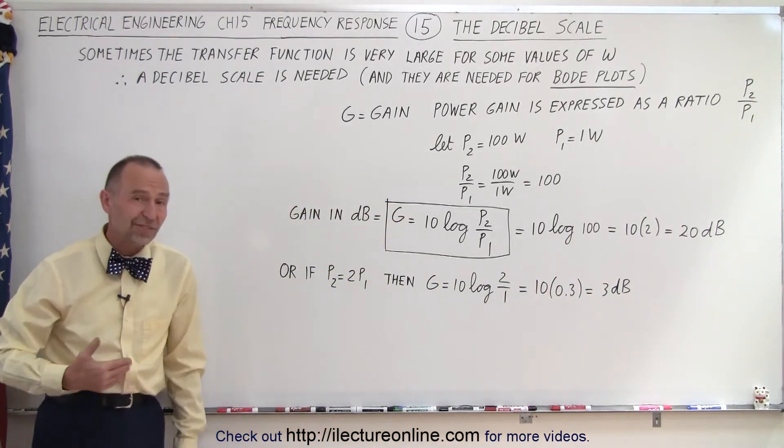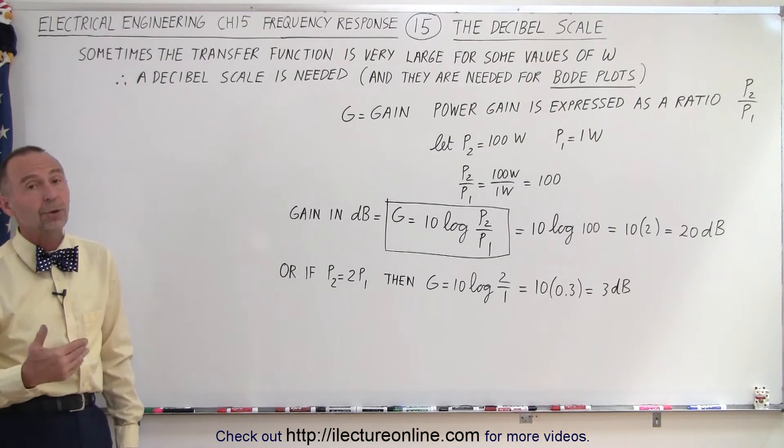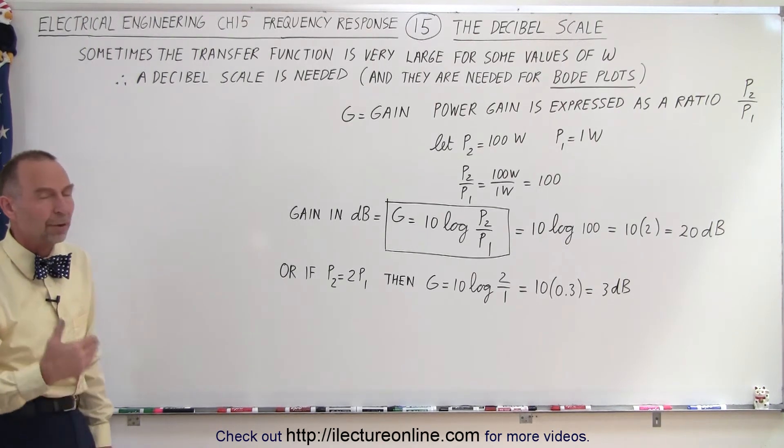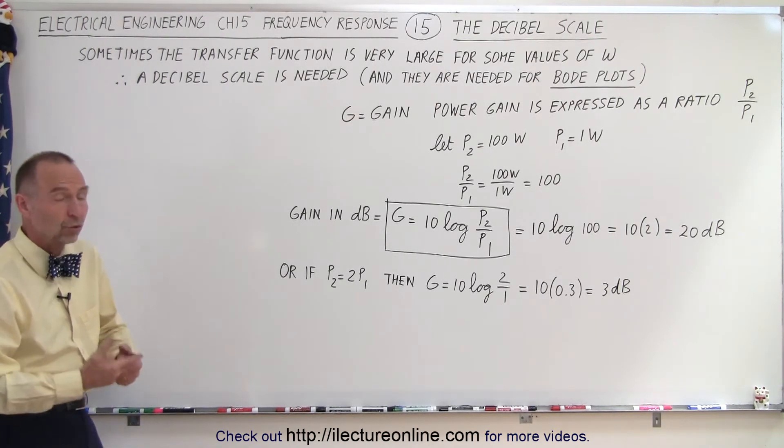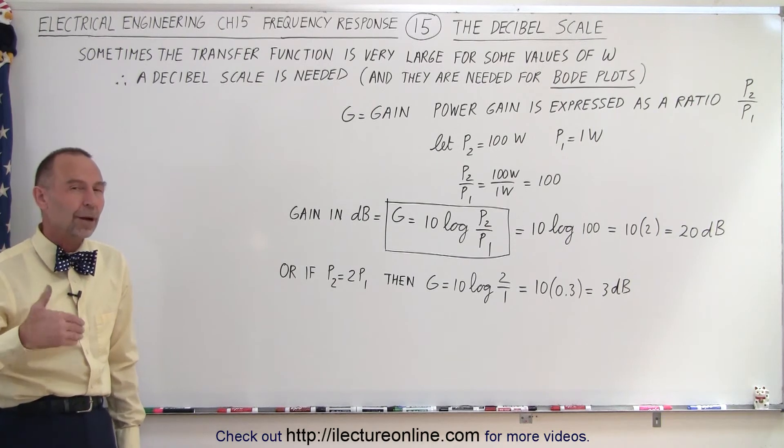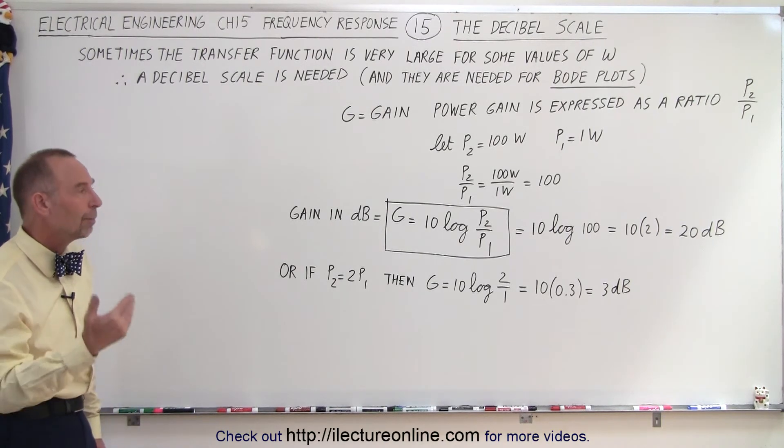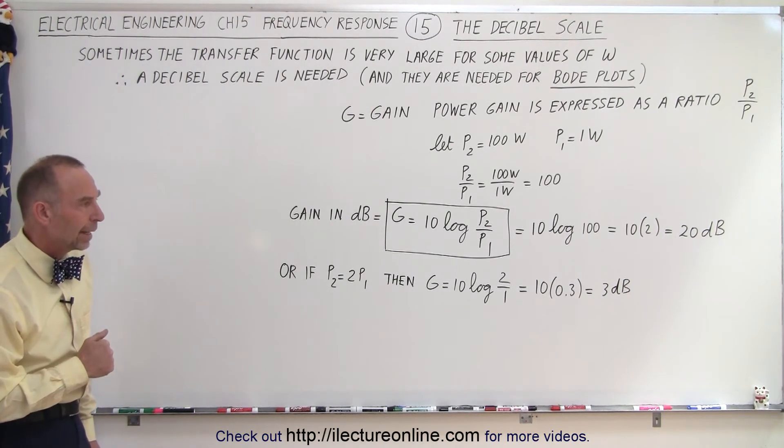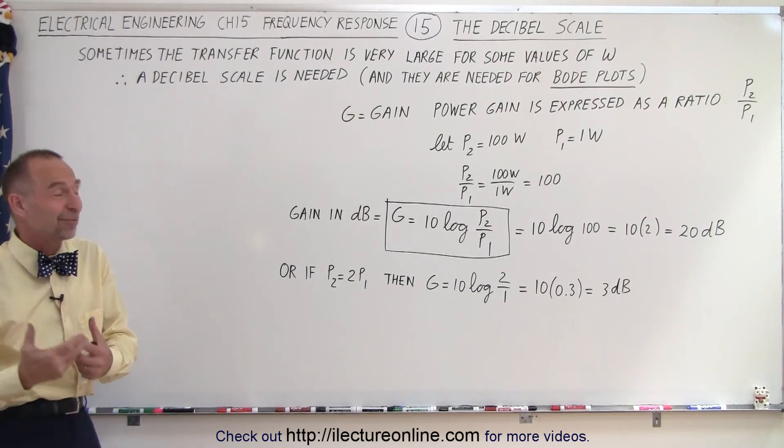So when we see a gain of 3 decibels, we know that the power output is twice the power input. If the decibel gain is 20 decibels, we know that the power output is 100 times the power input, not just 10 times.